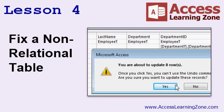In lesson four, we're going to mix together our skills with update queries and our skills with relational tables, and we're going to fix a table that wasn't designed to be relational in the beginning and make it relational. For example, we have an employee table, and whoever built the database was typing in department names as straight text. As we know, that's not good relational design, so in this lesson we'll fix that and turn department names into department IDs.